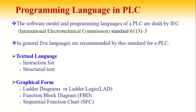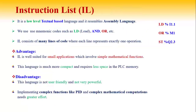In textual-type languages, instructions are normally written with English-like words, whereas in graphical-form programming languages, all instructions are normally written using different symbols. I will discuss all five types of programming languages with examples.